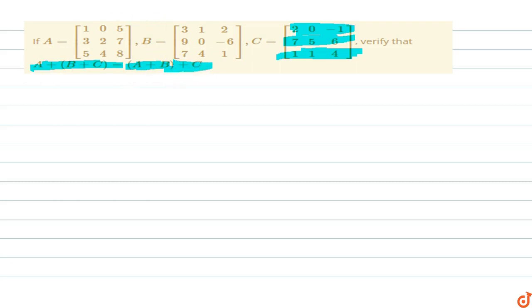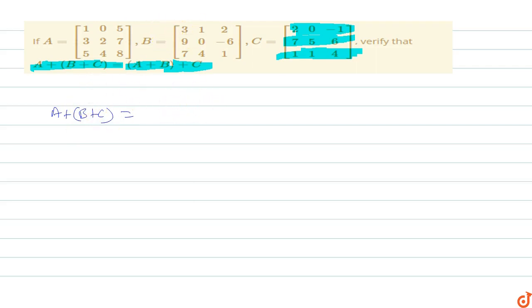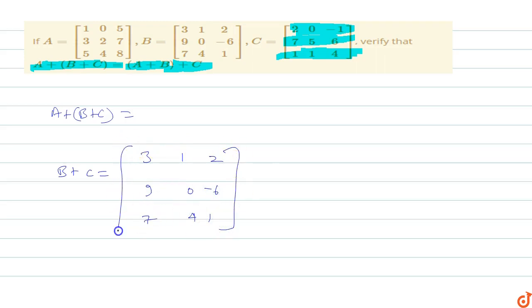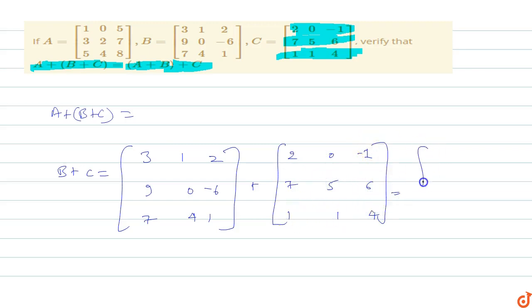First we find A + (B + C), so we calculate B + C first. Matrix B is 3 1 2 / 9 0 -6 / 7 4 1, and matrix C is 2 0 -1 / 7 5 6 / 1 1 4.